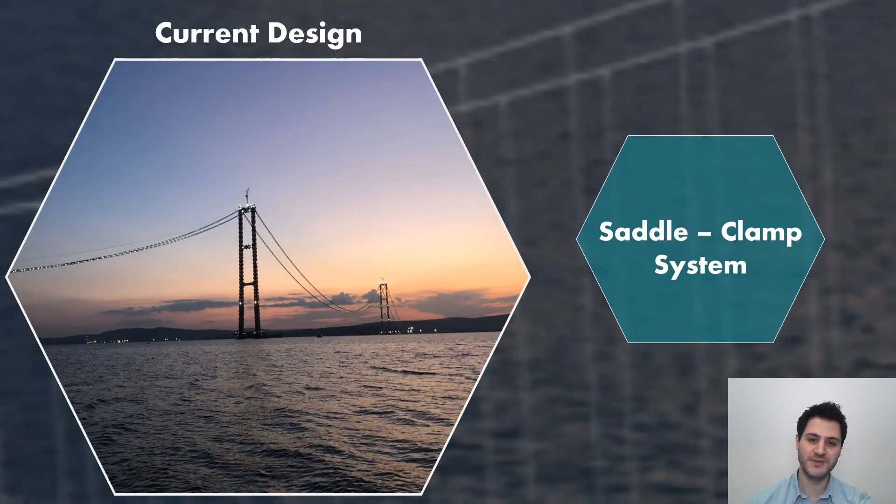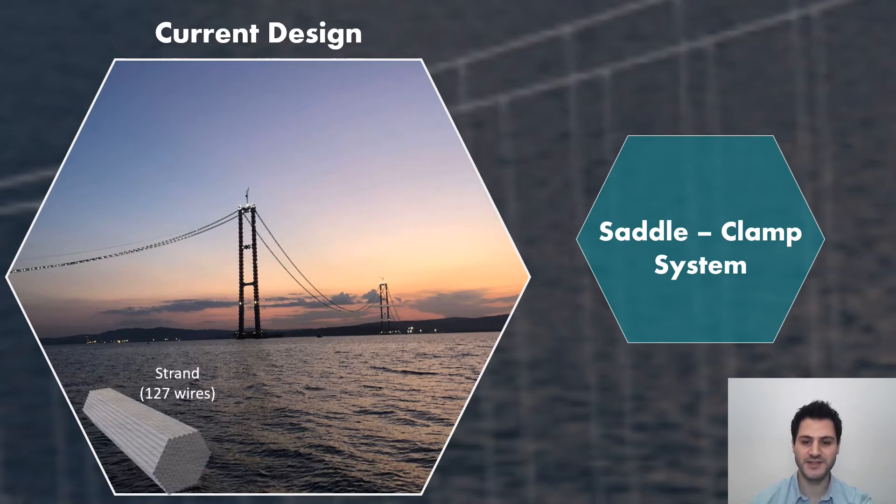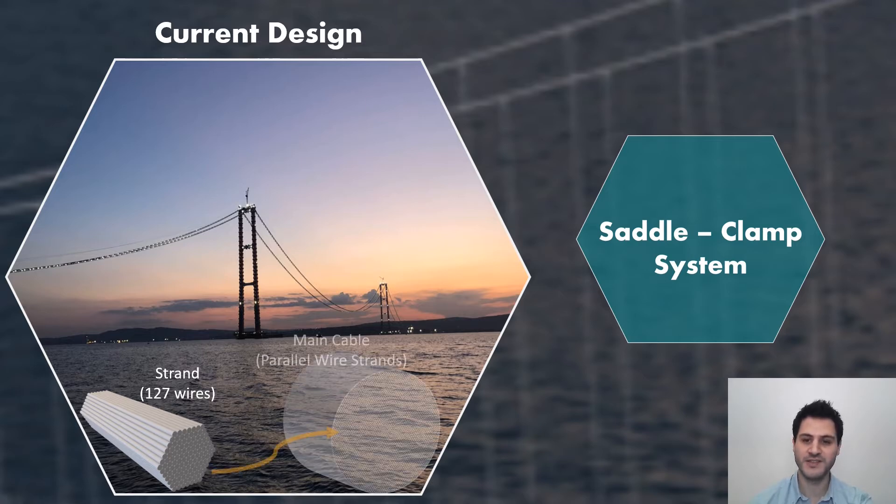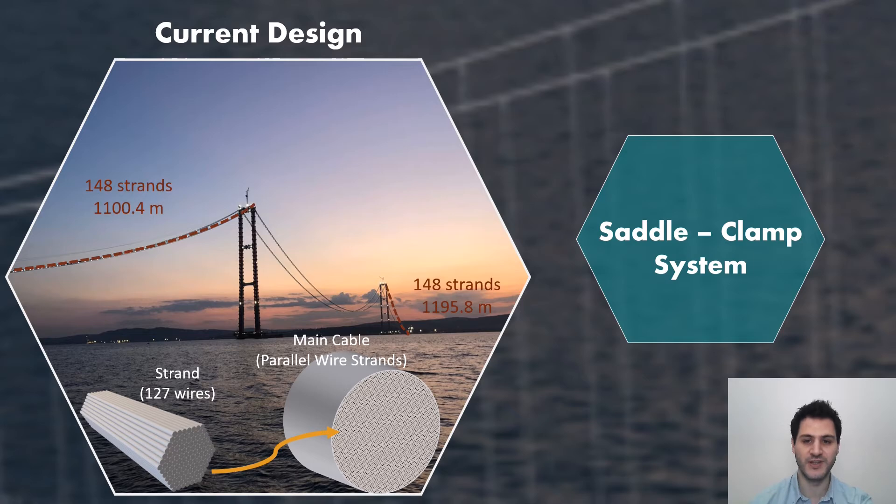Before the saddle clamp system, I would like to inform you about the current cable structure design of 1915 Çanakkale bridge to show which parts of the bridge are going to be revised. Parallel wire strands are used for the main cable and each strand consists of 127 wires. For side spans of the bridge, 148 strands are utilized while this number is 144 for the main span. This is a traditional method and main cable area is consistent with constant number of strands per span.